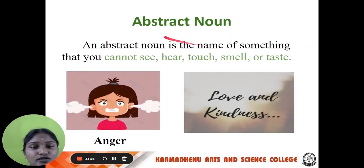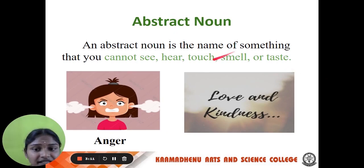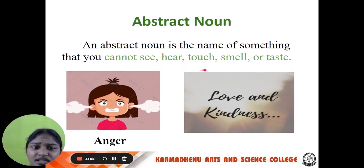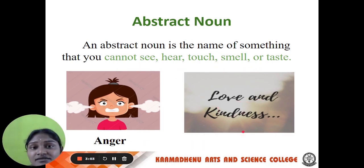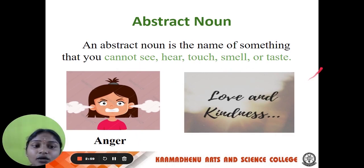Next, we are going to see abstract noun. An abstract noun is a name of something that you cannot see, touch, smell or feel. For example, anger, love, unkindness — these things we cannot be able to see. So this is called an abstract noun.